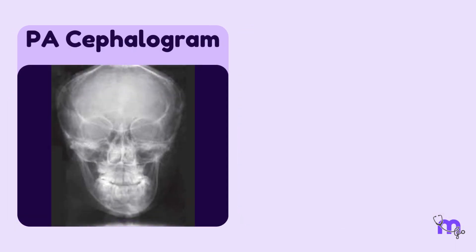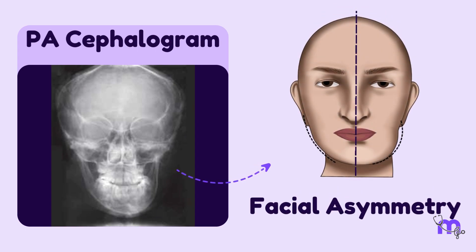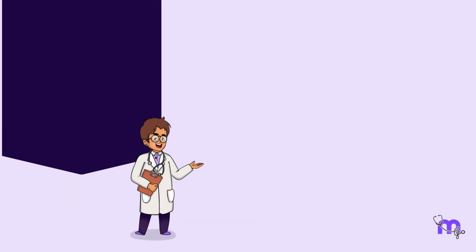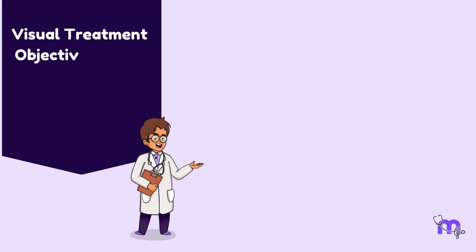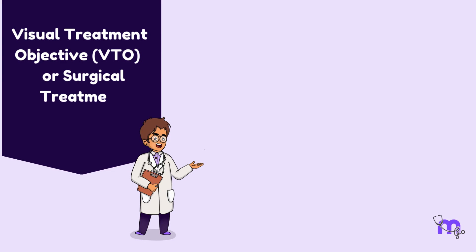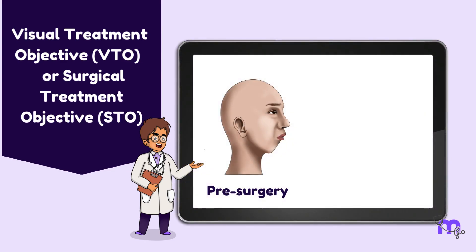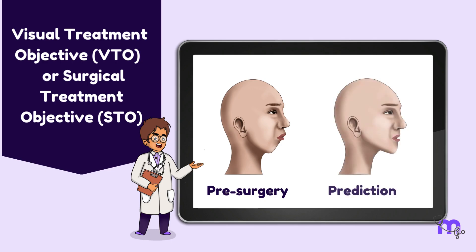A PA cephalogram is done in cases of facial asymmetry. We also use something called visual treatment objective, i.e., VTO, or surgical treatment objective, or STO. This is done with software that enables us to predict post-treatment outcomes and also for patient information.